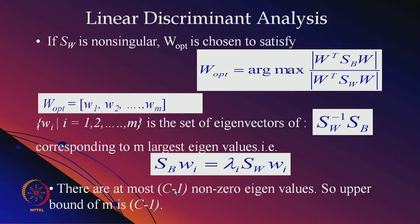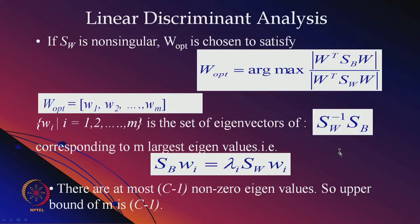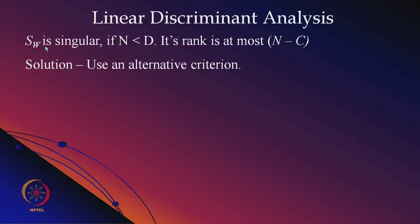There are at most C−1 nonzero eigenvalues in the eigen-spectrum of SW⁻¹·SB, so the upper bound on m is the number of classes minus 1. SW is singular if the total number of samples n is less than the dimension d. Its rank is at most n−c, where c is the number of classes.